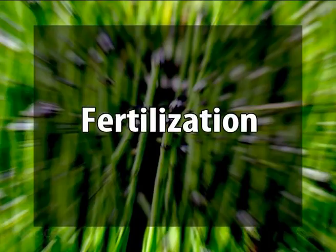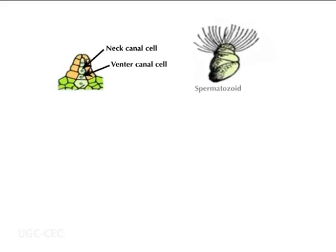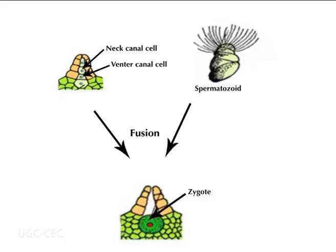Now we will discuss fertilization in Equisetum. Before fertilization, the neck canal cells and ventral canal cells disintegrate and form a passage for the entry of antherozoids. The disintegrated mass of these cells contains malic acid, which attracts freely swimming antherozoids towards the neck of the archegonium. Although many antherozoids move towards an archegonium, only one of them swims into it and fuses with the egg, thus forming the zygote. Usually more than one archegonium is fertilized in a prothallus; for example, in case of Equisetum debile, as many as 15 young embryos have been observed in a single prothallus.